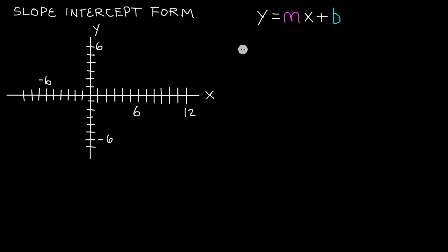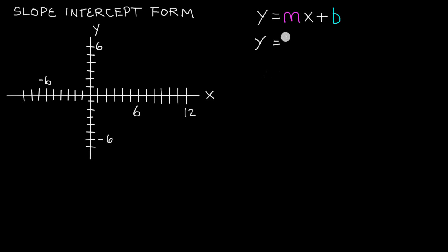The slope-intercept form of a line looks like this: y is equal to mx plus b. So m is going to be the slope of our line, and b is going to be the point on the y-axis where our line crosses. For example, looking at this line written in slope-intercept form: y is equal to 3x plus 2. In this case, our slope m is equal to 3, and our b is equal to 2.